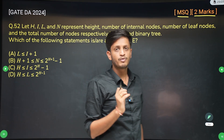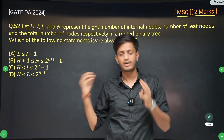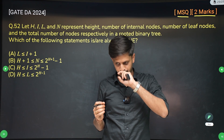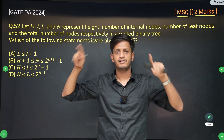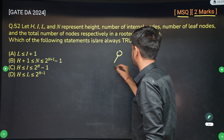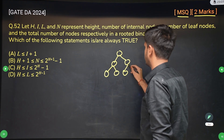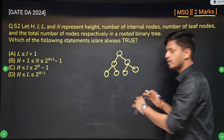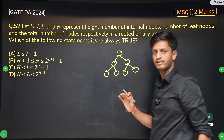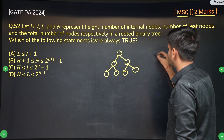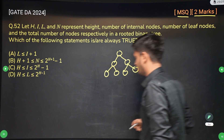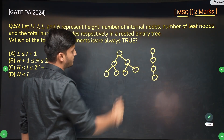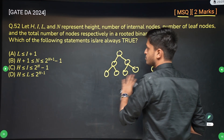Whenever you want to find the minimum or maximum number of leaf nodes, internal nodes, or total nodes, the count will be maximum if the tree is a complete binary tree, and minimum if the tree is just a chain. For a given height, the number of nodes and leaf nodes will be maximum in a complete binary tree and minimum in a chain. Always use these two cases to calculate the minimum and maximum.